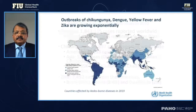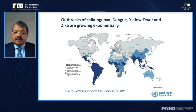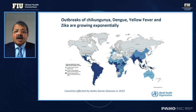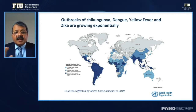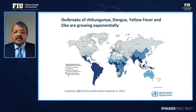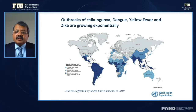We have mapped the world on outbreaks of all four arboviruses — chikungunya, dengue, yellow fever, and zika. They are affecting a whole range of countries. Dengue alone accounts for 129 countries worldwide, and the others continue to affect many parts of the world as well.